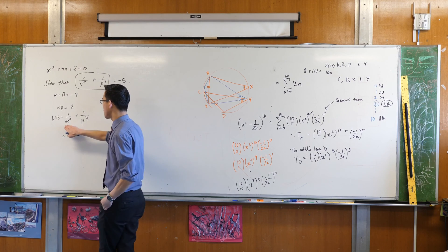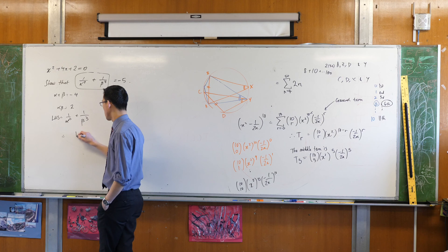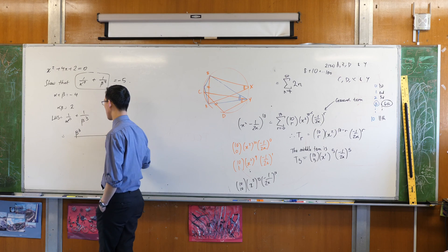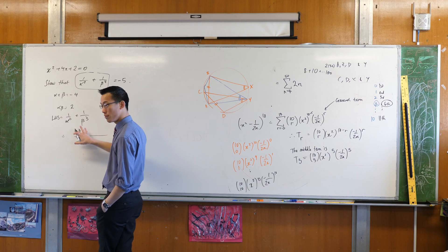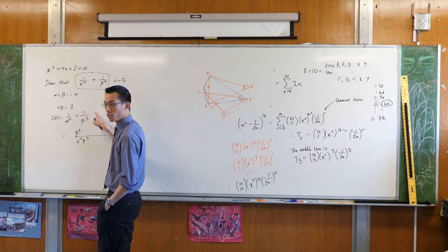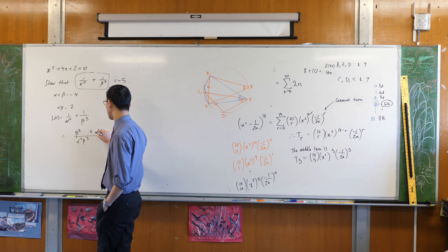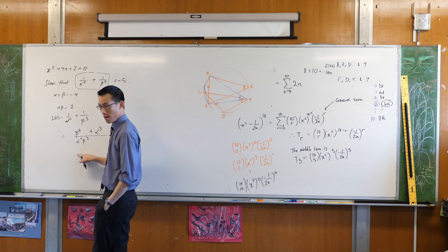If I multiply this by beta cubed on beta cubed, I'll get this. That's that one. And then if I multiply this by alpha cubed on alpha cubed, I'll get this on the same denominator. Is that okay?